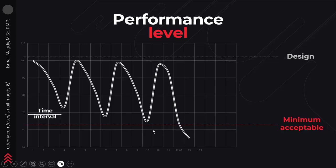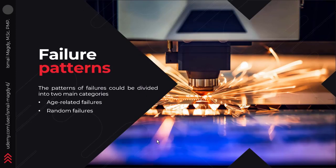In order to understand the second negative of preventive maintenance, we need to first understand the concept of failure patterns. Failure patterns are the different patterns that we expect an equipment or a specific spare part to fail based on its lifetime, and they are divided into two main categories: age-related patterns and random patterns.